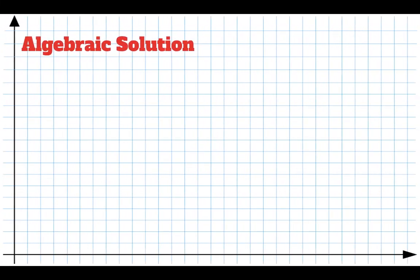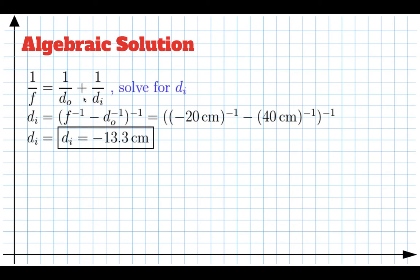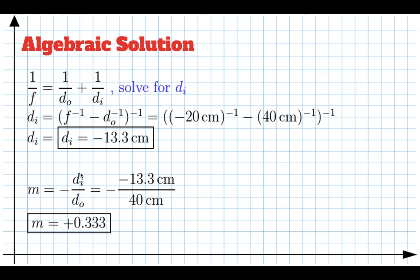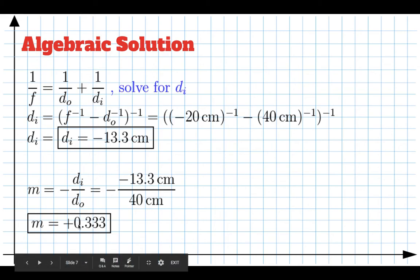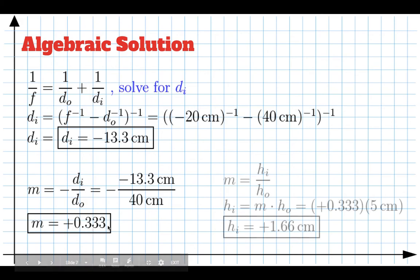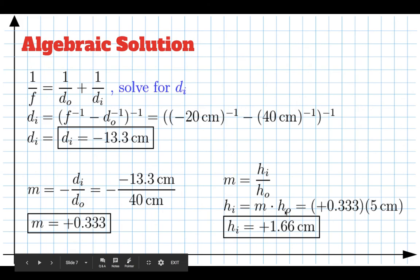We can also look at an algebraic solution using the same Lensmakers equation — the only difference is the focal length is negative. So we calculate 1 over negative 20 minus 1 over 40, and the reciprocal of that answer is the distance to the image: negative 13.3, which agrees well with our geometric solution. The magnification is negative the distance to the image over the distance to the object: negative 13.3 divided by 40, giving a positive magnification — the negative signs cancel and the image is upright. The height of the image is magnification times height of the object, giving 1.66 centimeters, in good agreement with the ray diagram.